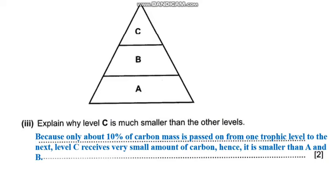To illustrate: if you have 1000 kilojoules of energy at trophic level A, only 10% of it is passed on to the next level, which gives 100 kilojoules. At level B, again only 10% is transferred to the next level, giving 10 kilojoules. You can see there is a decrease in energy as it is transferred from producers to primary consumers and then to secondary consumers.